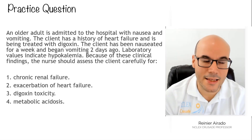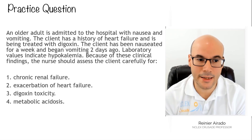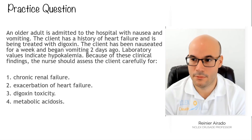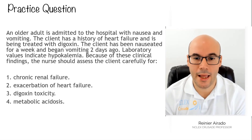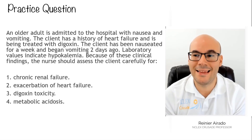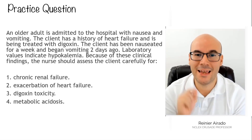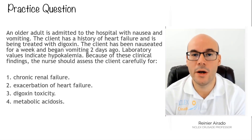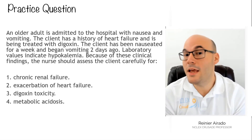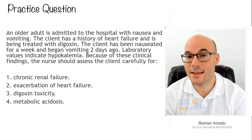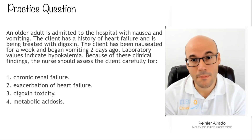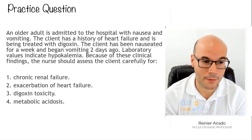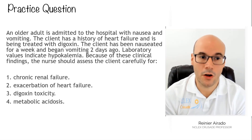Let's review this question: an older adult is admitted to the hospital with nausea and vomiting. I want you to write this down — anytime you are doing an NCLEX question, you need to identify the five key factors. Factor number one: who is your patient? What is your patient's age, ethnicity, is it a male or female? When they tell you information about your patient, it's important. So factor number one: who is your patient?